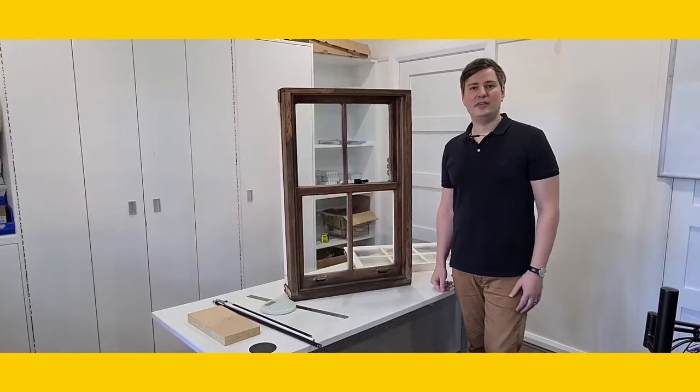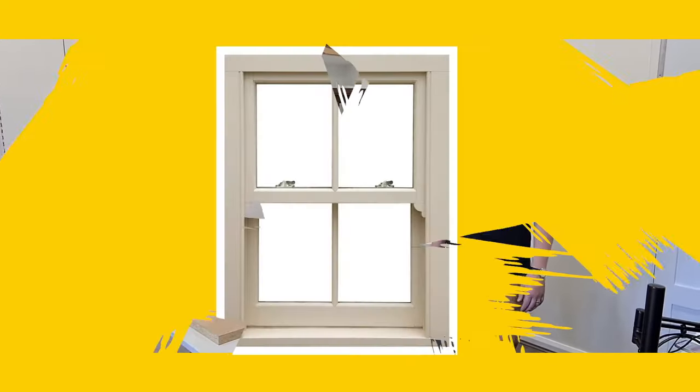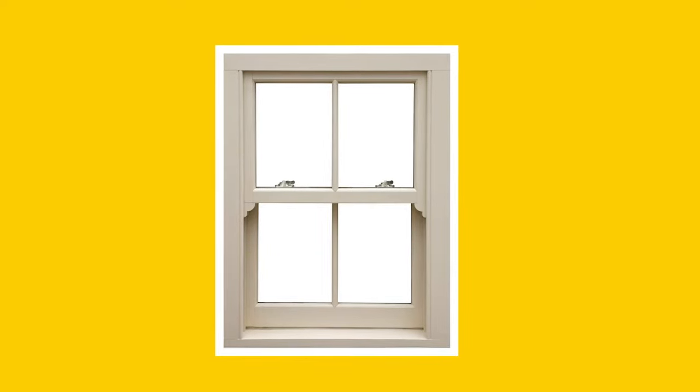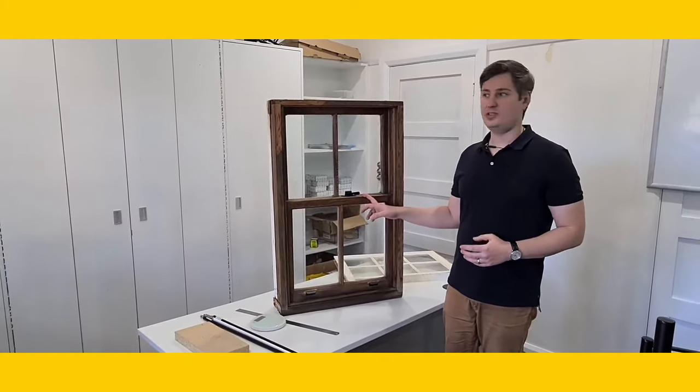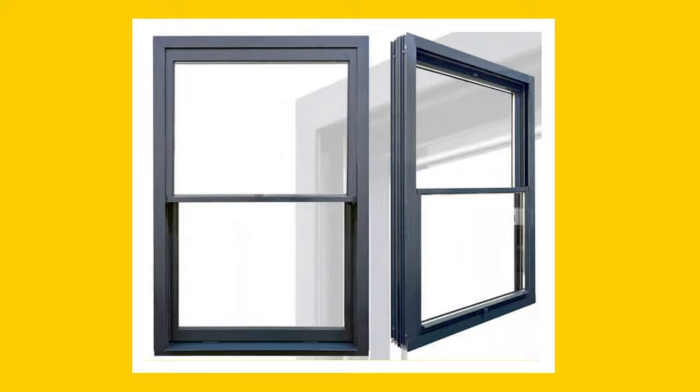Typically you will find three different types of sash windows. The first, which is probably one of the most common, is your double hung sash windows. Then you have single hung sash windows, which is what we will be demonstrating today. They also come in timber and aluminium. Okay, let's get started.